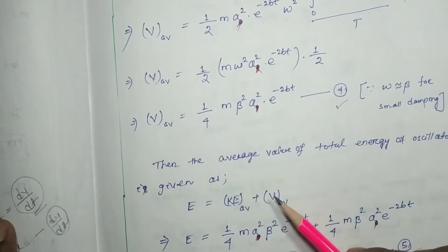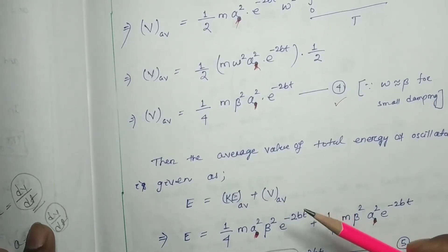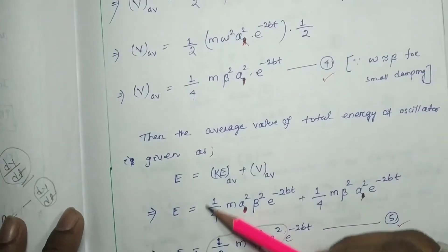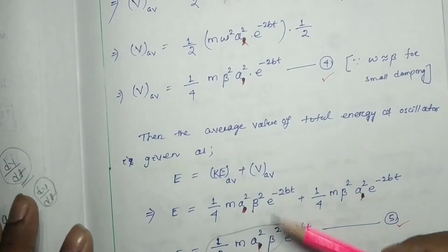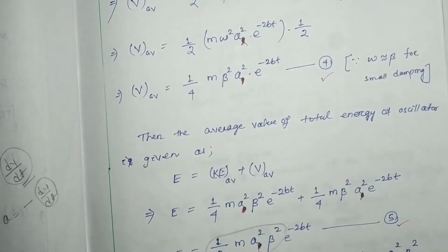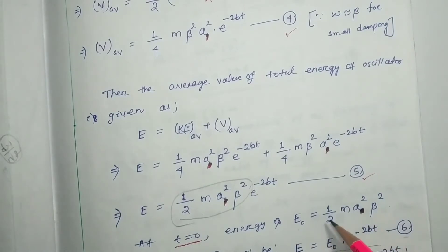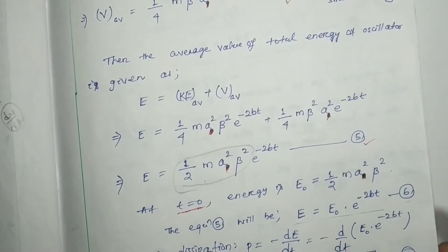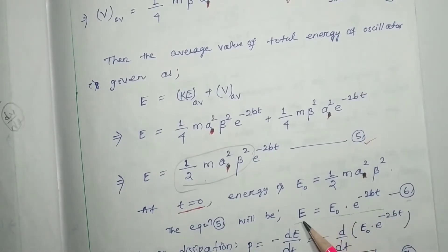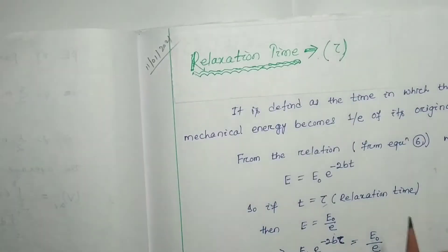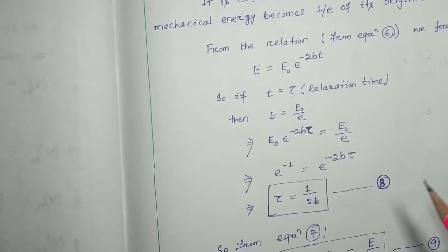I suggest again that you go through the last video to see how these values were derived so you can clearly understand these terms. We found the maximum energy as stated, and the instantaneous energy can be written in the form of equation number 6. Equation number 6 represents the instantaneous energy of a damped harmonic oscillator.